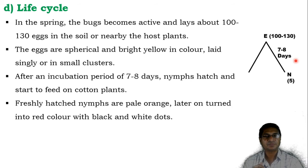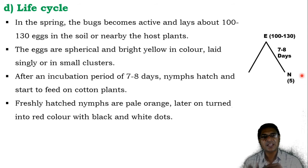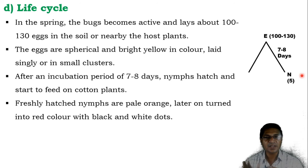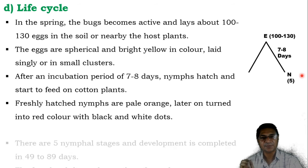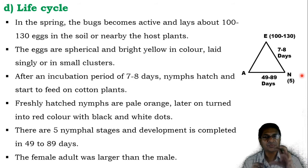After an incubation period of around 7 to 8 days, the nymphs hatch and start to feed on the growing shoots of the cotton plant. The nymph looks similar to the adult — only size and reproductive structure differentiate the nymph from the adult. Color pattern, shape, and feeding habit are the same. Freshly hatched nymphs are pale orange in color but later turn red with black and white dots. There are a total of five nymphal instars.